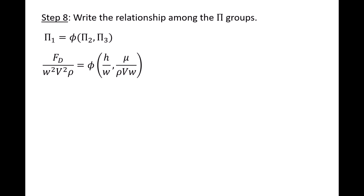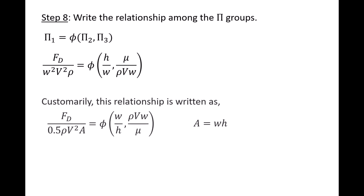Although we could end the problem now, this is not the typical way to write the pi groups for an application involving drag. Instead, we'll use the reciprocal of the pi 2 and pi 3 groups. W over h is called the aspect ratio, and rho v w over mu is the Reynolds number. Additionally, the w squared term in the pi 1 group, which has dimensions of area, is usually replaced by the sign's profile area, w times h. In this form, pi 1 is called the drag coefficient. At this point, we would need to conduct experiments to find the functional relationship phi, by varying the flow speed — which varies the Reynolds number — for signs with different aspect ratios, and measuring the resultant drag force required to keep the sign stationary.